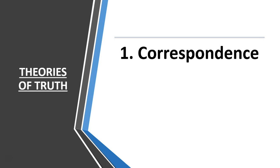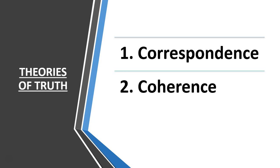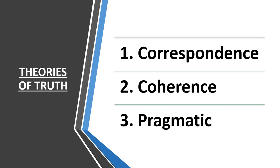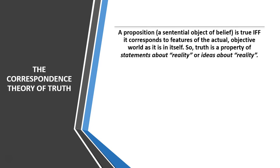The first is known as correspondence, and that's the most commonplace understanding of what it means for an idea or a statement to be true. Next we'll look at the coherence theory of truth, and last we'll look at the pragmatic theory of truth. The correspondence theory of truth: a proposition — which is a sentential or sentence-based object of belief — is true if and only if it corresponds to features of the actual objective world as it is in itself.